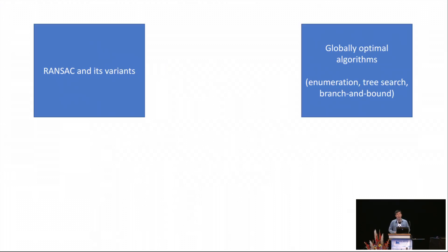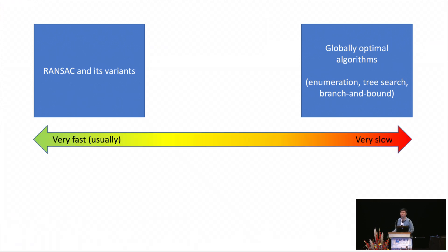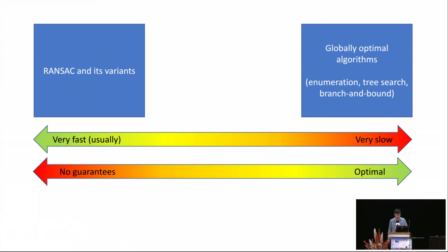In previous time we already have many algorithms for consensus maximization. On one hand we have RANSAC and its variants which are usually very fast, and on the other hand we have global optimal algorithms which are slow in general. In terms of accuracy, the global optimal algorithms always guarantee the best solution possible depending on the objective function, and RANSAC and its variants do not guarantee solution quality.